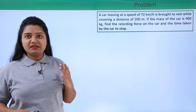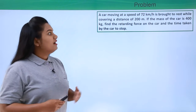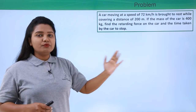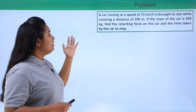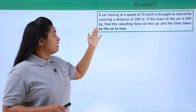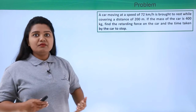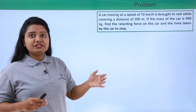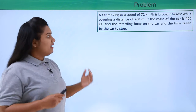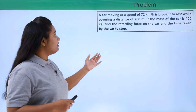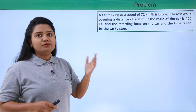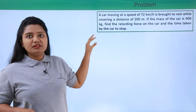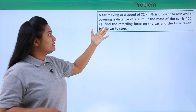So here there is a car which is moving with a speed of 72 kilometers per hour and it has covered 200 meters before stopping. The mass of the car is 400 kg. We need to find what is the retarding force which has acted onto the car due to which it has come to a stop, and the time that the car has taken to come to the stop. First of all, let us list out whatever the question has given us.